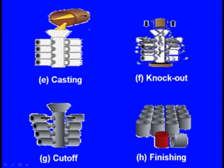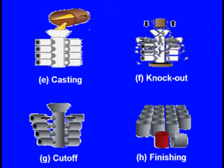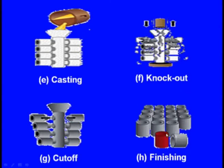After knockout, we need to separate the individual castings, so we cut them from the central tree — this is known as cutoff. The components produced by investment casting have a very smooth surface finish, but a final finish is still applied. If painting is required, we do that too. This is the final stage of the investment casting process.